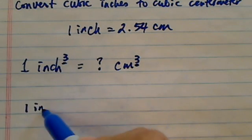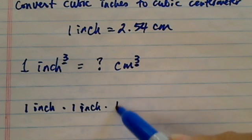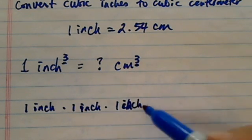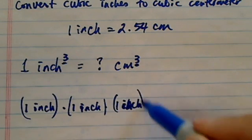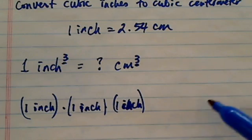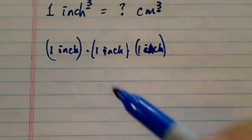Let's start with one inch times one inch times one inch. So here's my cubic inches. And then what I need to do is convert all of them, each inches, into cubic centimeters.